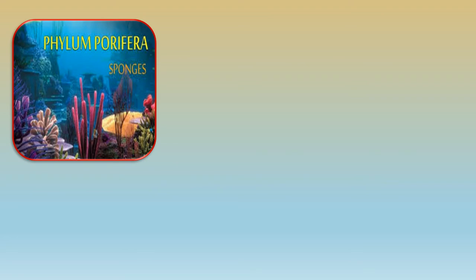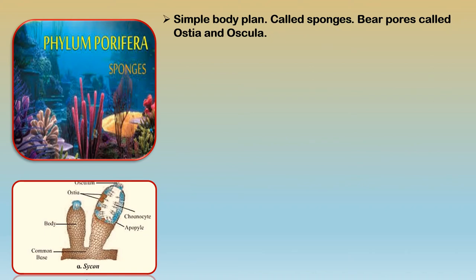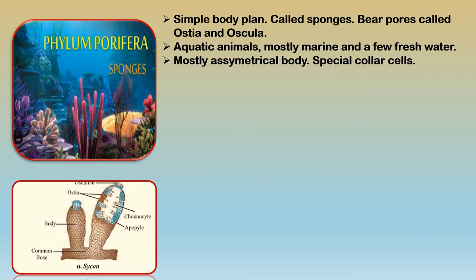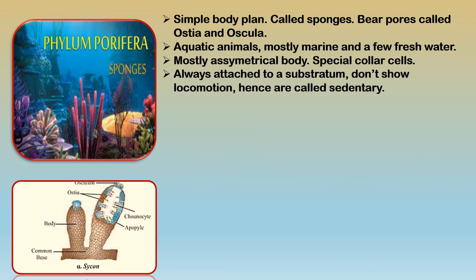Phylum Porifera, or sponges, have a simple body plan bearing pores called ostia and an osculum on the top, as seen in this diagram. They are aquatic animals — few are freshwater but mostly marine, living in salt water. The body is mainly asymmetrical and they have special collar cells which give the ostia and osculum structural support.